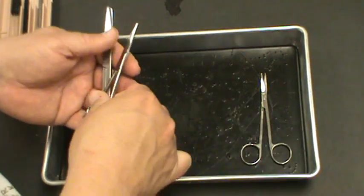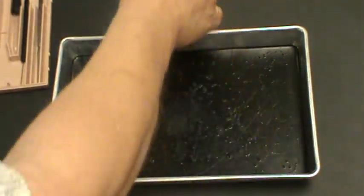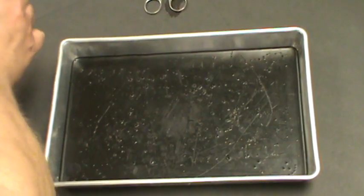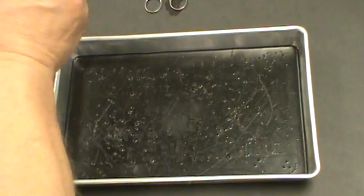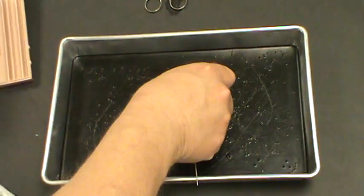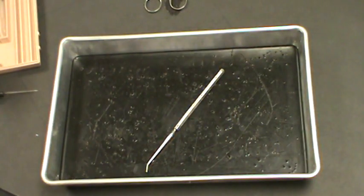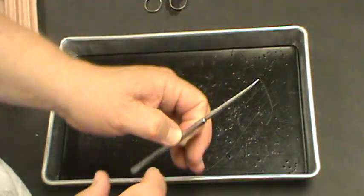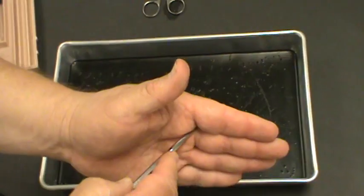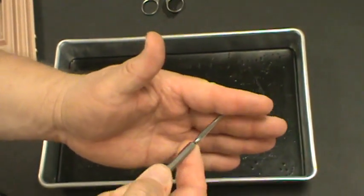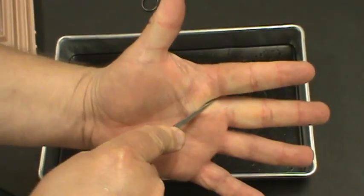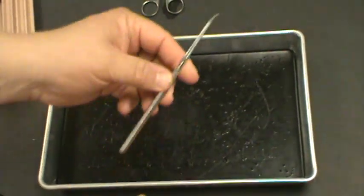More tools that we use in our dissection kits. The next set of tools that you'll need to know are the teasing needles and the probes. Probe is just that. It's a very useful sturdy tool. It's used for probing into tissue if you're not worried about damaging it. You can also use this to pull things out of the way or hold things back. That's a probe.